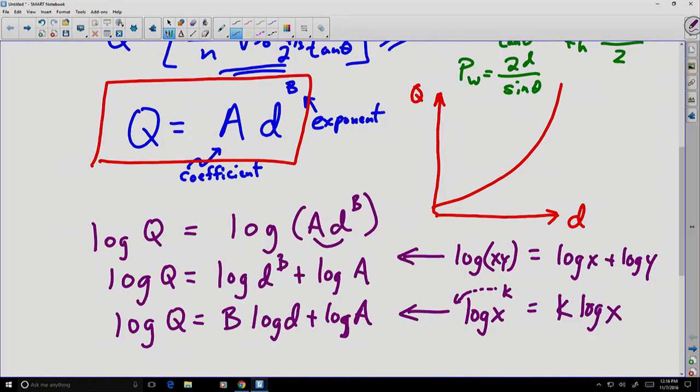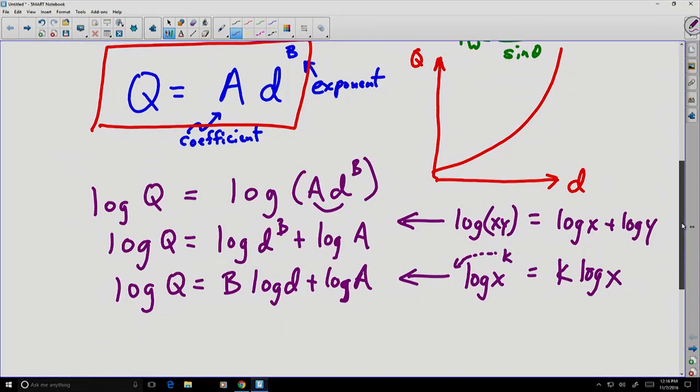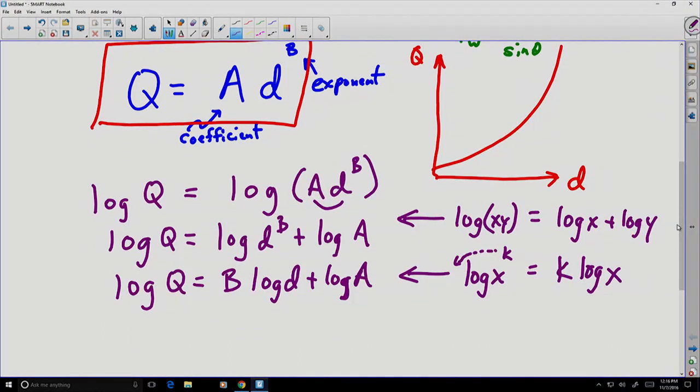Now here's why these substitutions were valuable. What we've done is we've taken a somewhat more complicated equation that had an exponent and a coefficient in it and reduced it to being a linear equation. Notice this is in the form, if we ignore the logs for the moment, this is in the form y equals m x plus b.